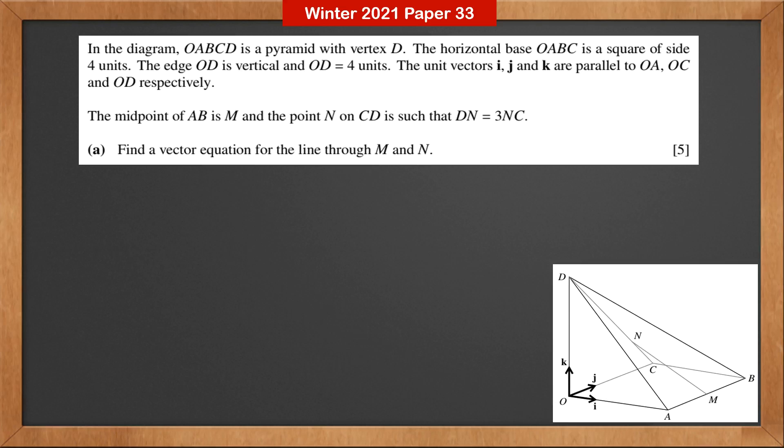Question 8. In the diagram, O, A, B, C, D is a pyramid with vertex D.